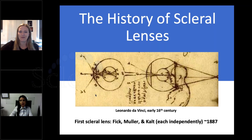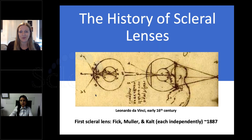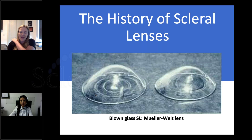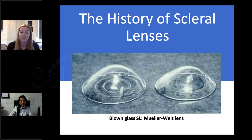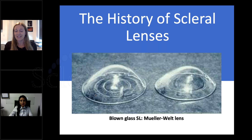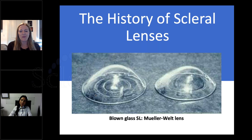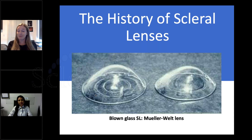A brief history of how this story evolved: scleral lenses conceptually — any type of contact lens — were first conceptualized in the early 16th century. The first lenses appeared independently around 1887 in a few different areas in Europe. The scleral lens was actually the first lens developed — it seems like the most recent, but really it was the first. And here's our first acronym: SL. We had SCCL, SCL, SL — we ended up going with SL.